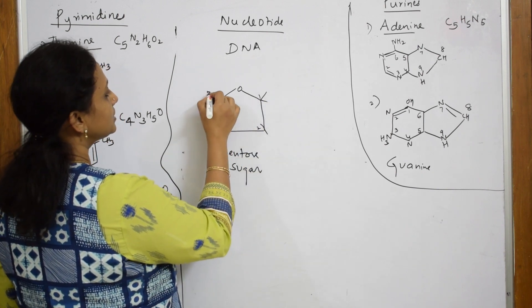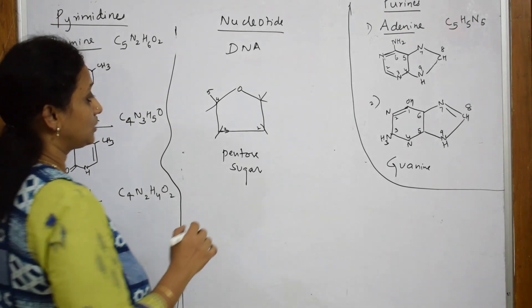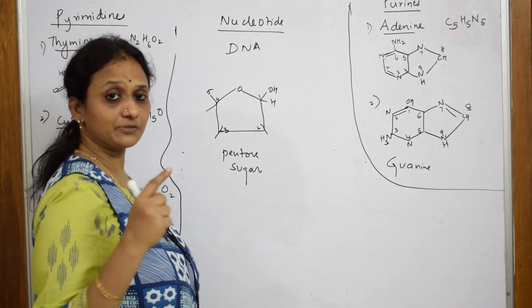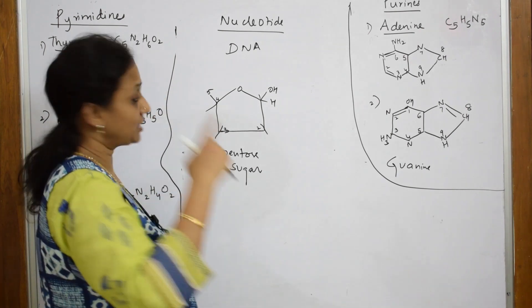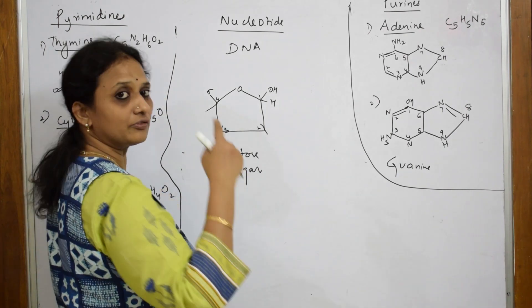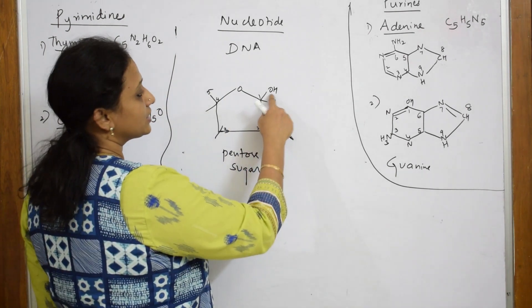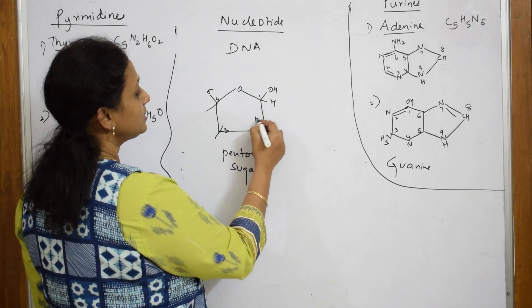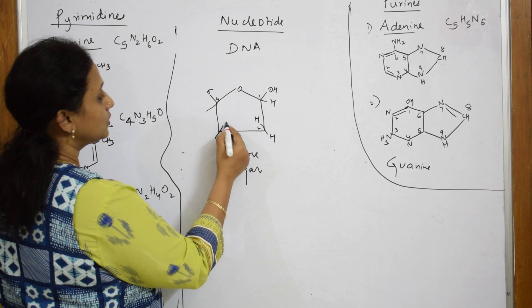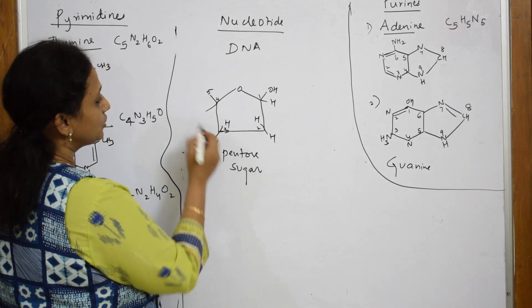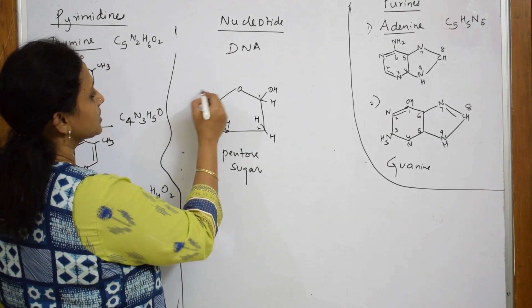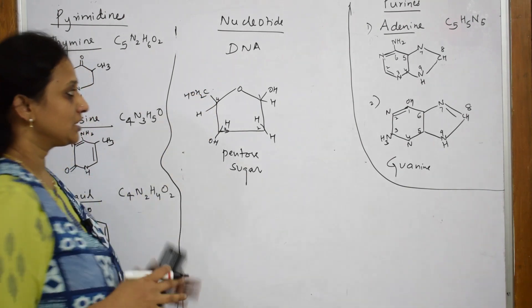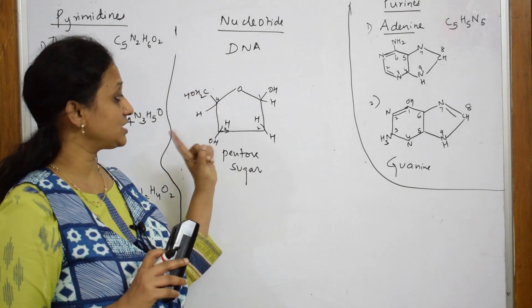This is your fourth carbon and this is your fifth carbon. Now observe: at the first carbon you have H and OH, formed from a cyclic structure with a shift of hydrogen. In the second carbon, H and H. Third carbon, H and OH. Fourth carbon, H and CH2OH. This is your DNA structure — deoxyribose.